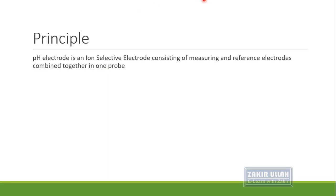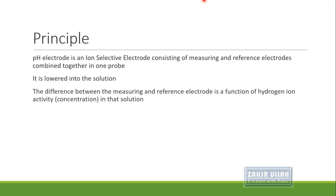The working principle of a pH meter: the pH electrode is an ion-selective electrode consisting of a measuring electrode combined with a reference electrode in one probe. This probe is lowered into a solution. The difference between the measuring and reference electrodes is determined by the hydrogen ion concentration in the solution. This difference is then translated by the pH meter instrument and the display bar shows us the reading.